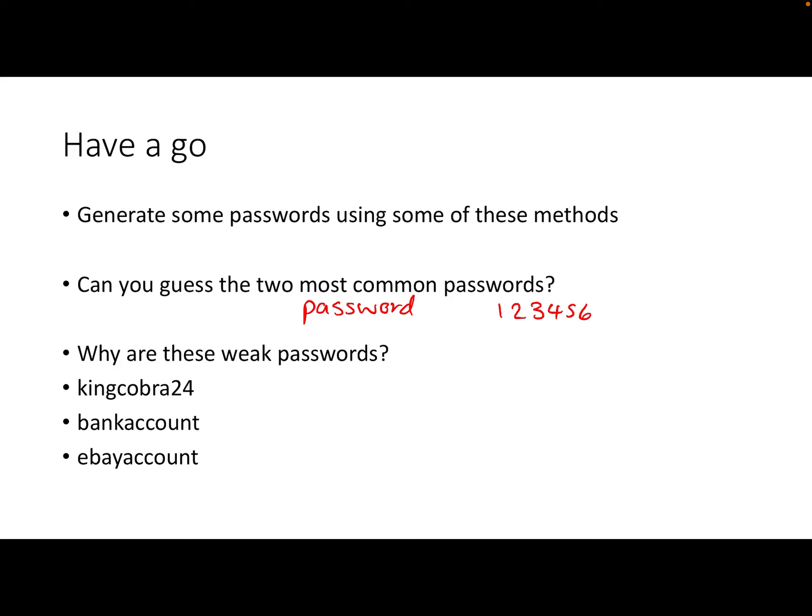Why are weak passwords weak? 'King cobra' is two related words — there is an animal called a king cobra. Try to get words that are unrelated. 'Bank account' — two related words, and if this is someone's password it's probably for their bank account. Similarly 'eBay account' — if someone's got that as their password it's probably for their eBay account, and that's probably the first thing hackers might try. Well done if you got that.